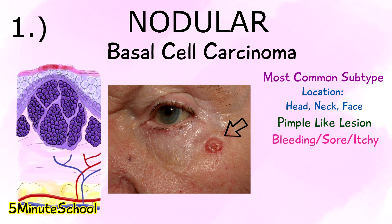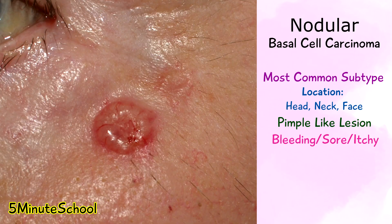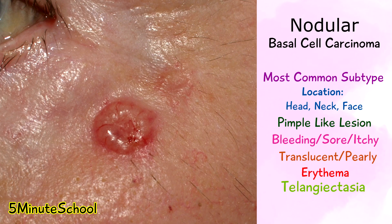Key features of nodular basal cell carcinoma include a translucent pearly appearance, erythema or redness, telangiectasia, and well-defined borders. Telangiectasia means you can see these dilated or broken blood vessels located near the surface of the skin. Sometimes these nodular basal cell carcinomas can be pigmented, and usually when they start getting bigger, we start to see ulcerations form, creating a crater-like appearance.